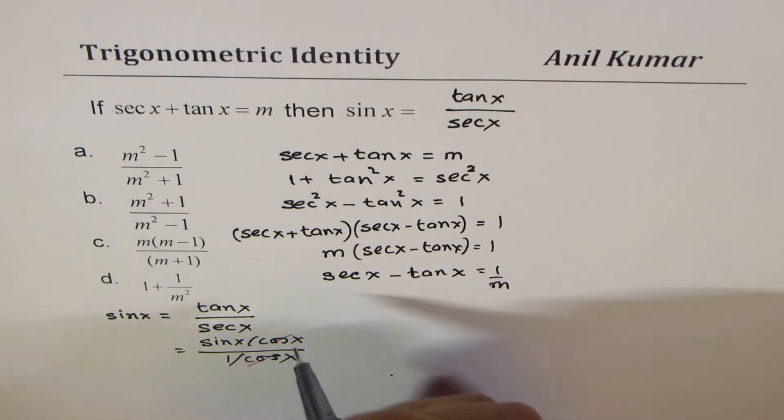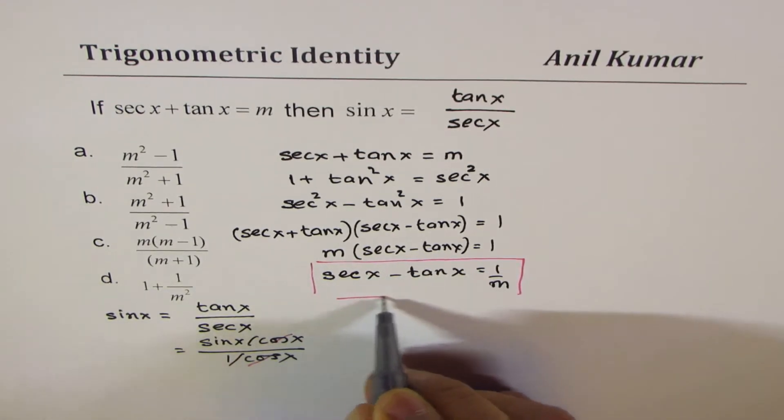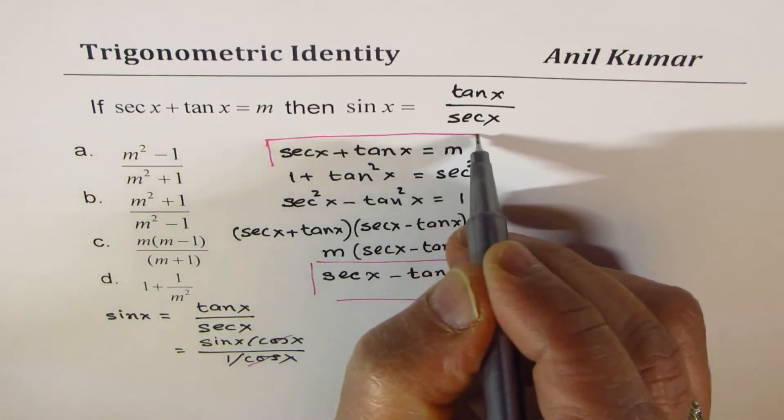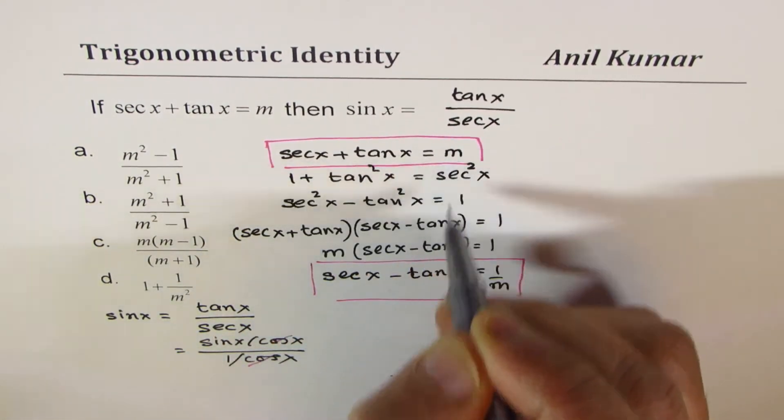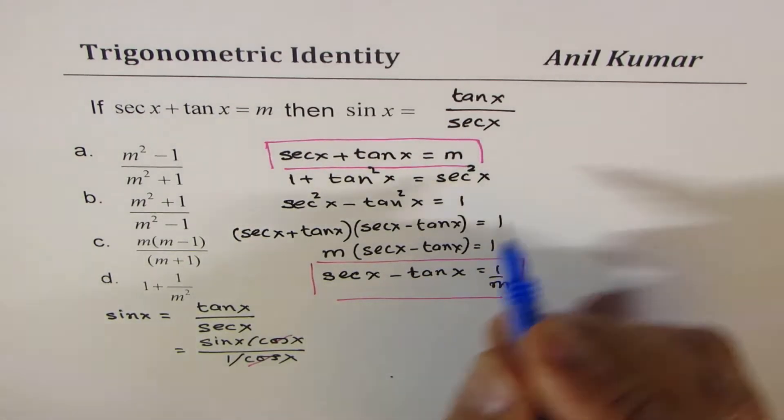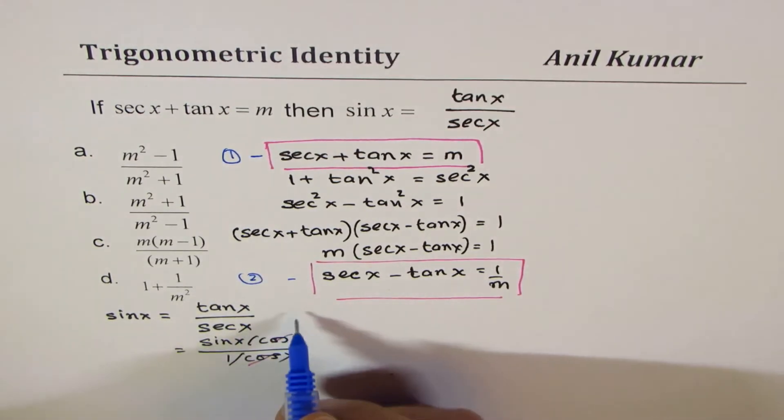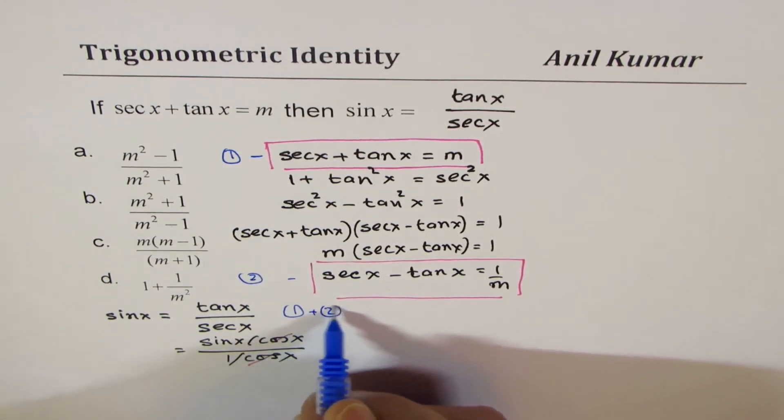So as you can see, we have two equations, right? So from these two equations, we can find the value of secant and tan in terms of m, perfect? So this, let me call this as equation 1, this is equation 2. So if I add equation 1 and 2, what do I get?